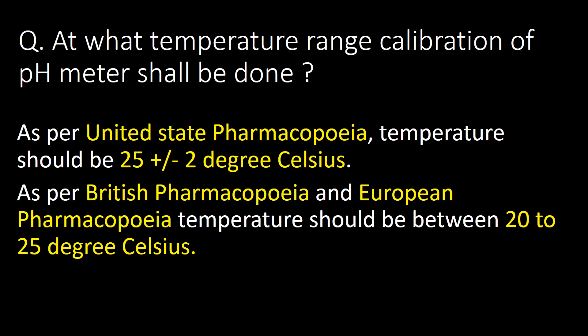At what temperature range shall calibration of a pH meter be done? As per USP, that is the United States Pharmacopoeia, temperature should be 25 plus or minus 2 degrees Celsius. Whereas as per the British Pharmacopoeia and European Pharmacopoeia, temperature should be between 20 to 25 degrees Celsius.